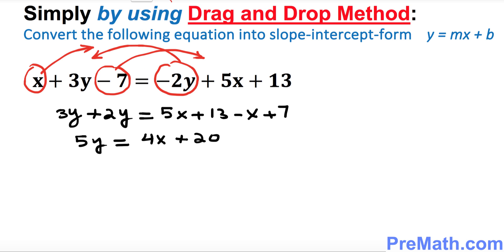Now I want you to divide across the board by 5 because we want to isolate y. Divided by 5, divided by 5.